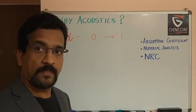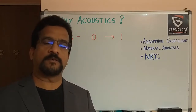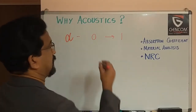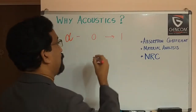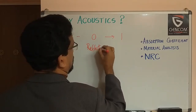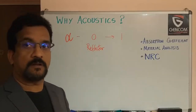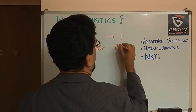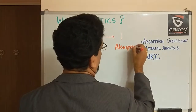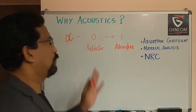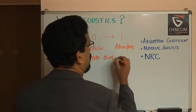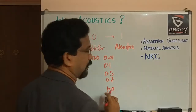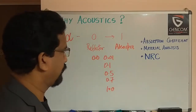When the absorption coefficient is 0, the material is not absorbing anything — it is a perfect reflector. When it is 1, the material is fully absorbing — it is a perfect absorber. So alpha can have values such as 0.01, 0.1, 0.5, or 0.7, all the way up to 1. You cannot get a value above 1. So just remember: 0 is a perfect reflector and 1 is a perfect absorber.